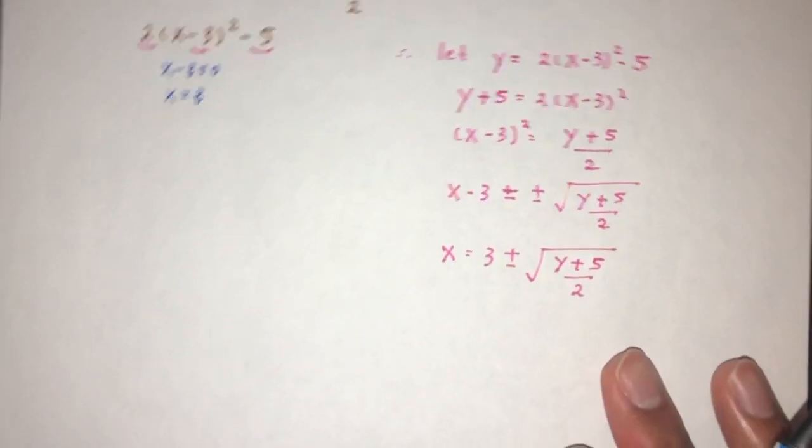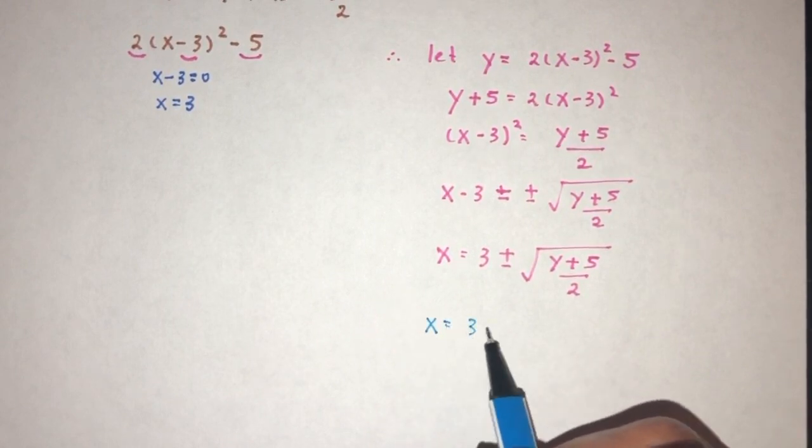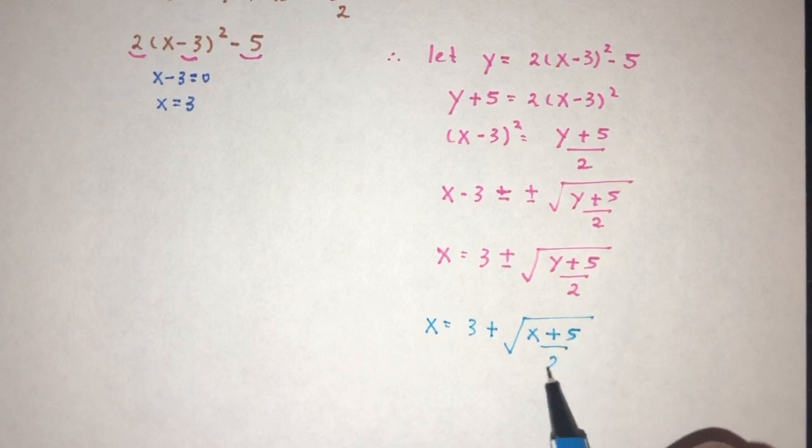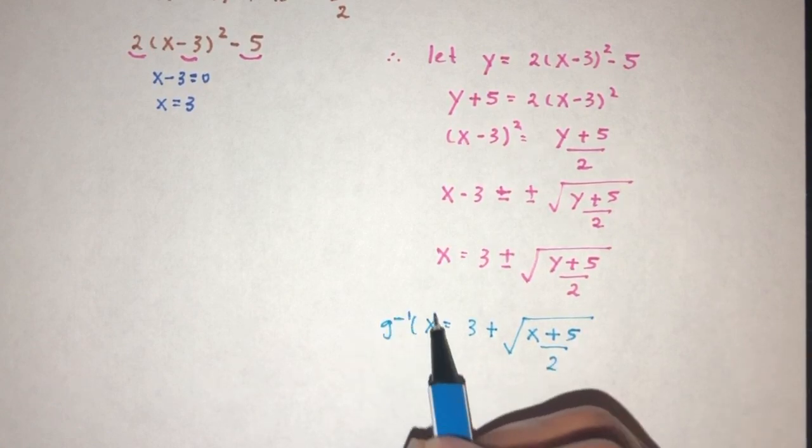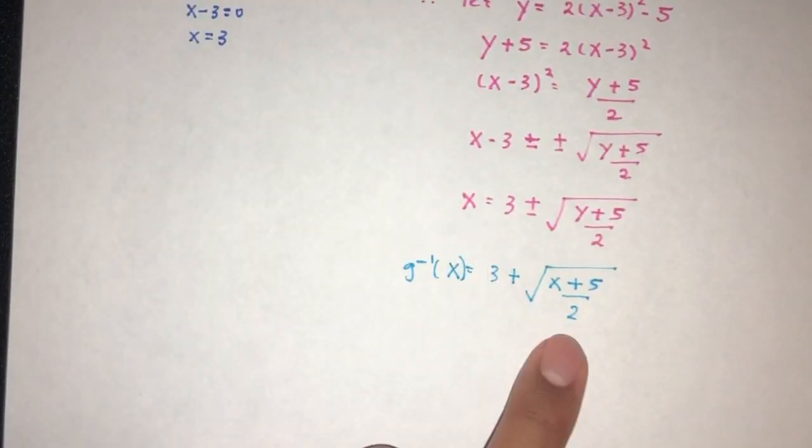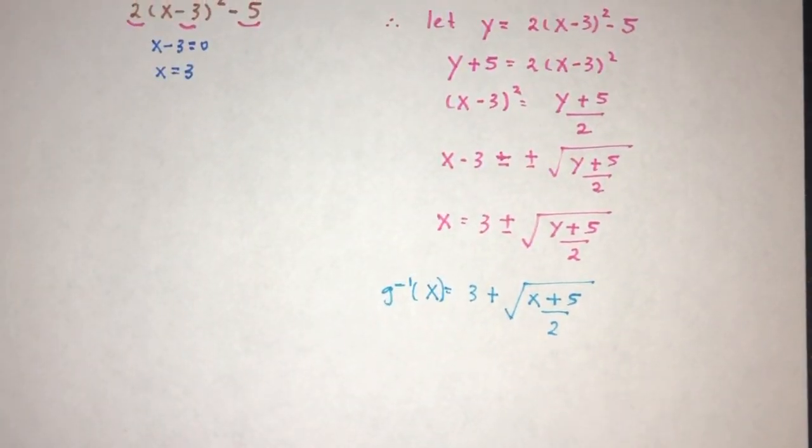In this case, x have to be 3 plus the value of this over 2. All right, that will be g inverse of x. Because the domain here is more than 4, it has to be always be positive here, that's why we have to choose this value.